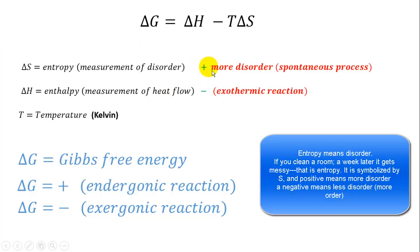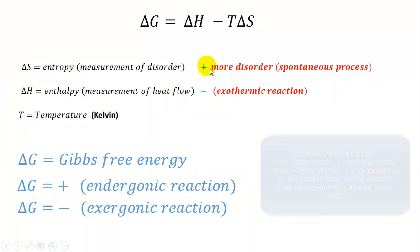If your delta S is positive, that means you're going to a situation that's more disordered. In that case, if the products are more disordered, the reaction is more likely to favor the product side.